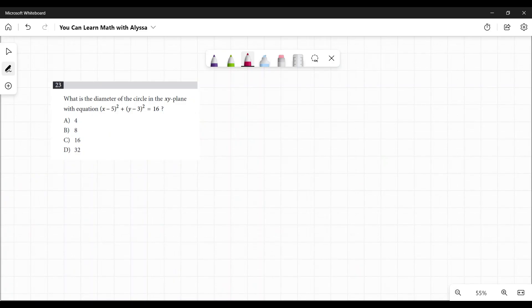Number 23, what is the diameter of the circle in the xy plane with equation x minus 5 squared plus y minus 3 squared equals 16?